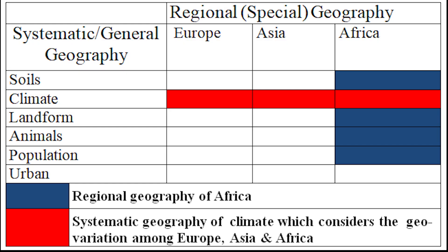Topical or systematic geography views particular categories of physical or human phenomena as distributed over the Earth. It is also called general geography. For example, if we study types of climate across Europe, Asia, and Africa, it is topical geography.